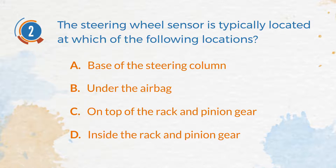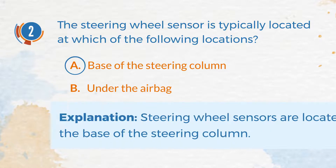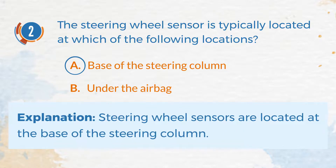The correct answer is A. Base of the steering column. Explanation: Steering wheel sensors are located at the base of the steering column.